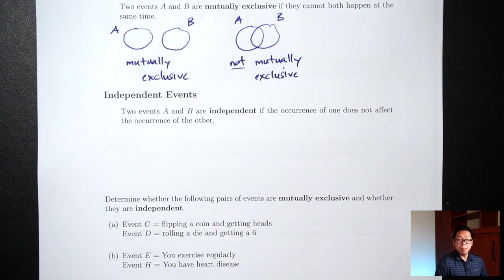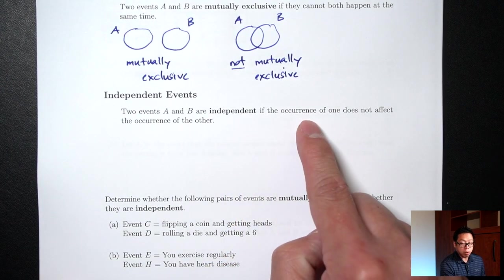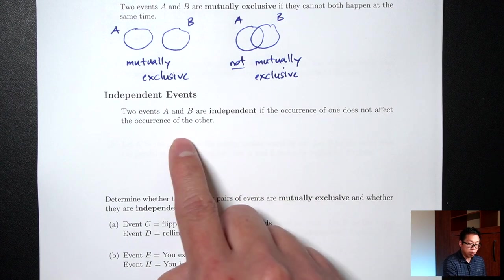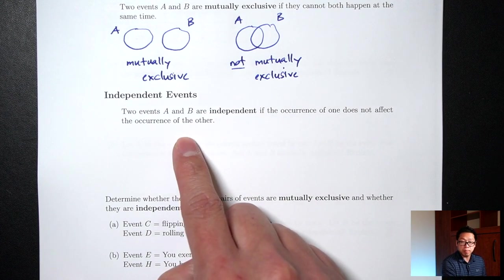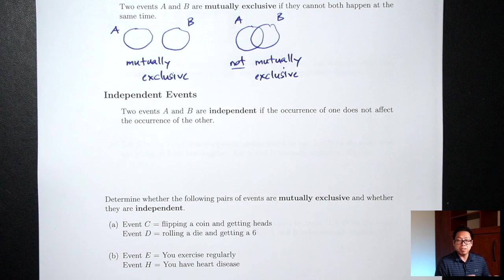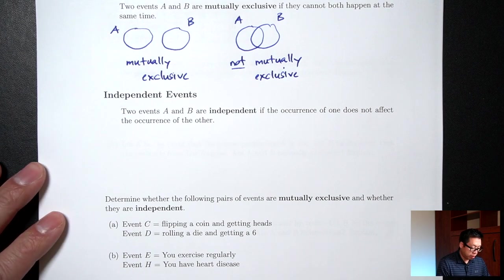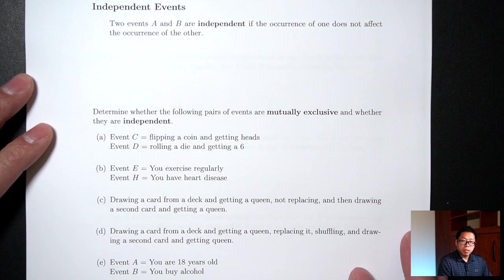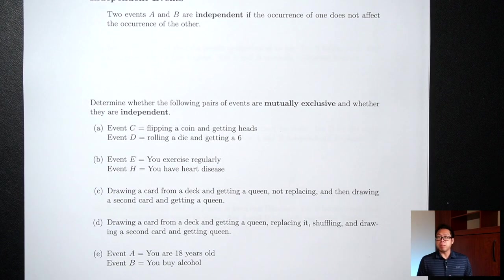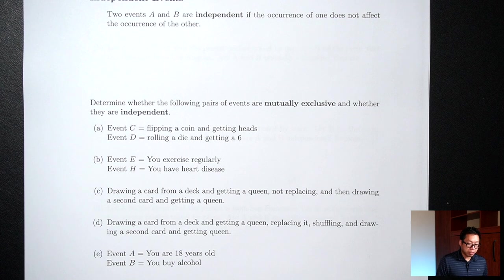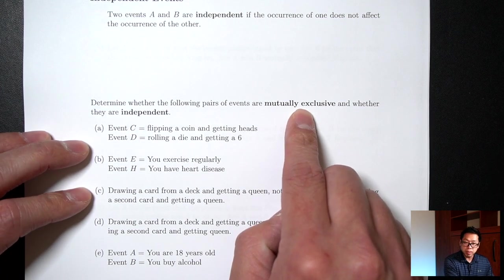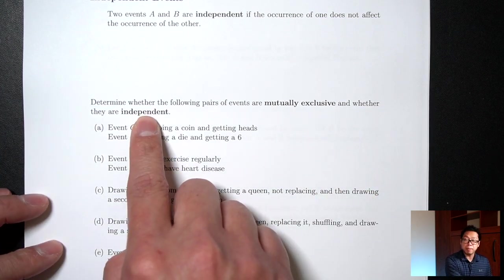The next idea is independence. Two events are independent if the occurrence of one does not affect the occurrence of the other. In other words, the two events don't have anything to do with each other at all. Now let's look at some examples. For each pair of events, we're going to decide whether they are mutually exclusive and also whether they are independent.